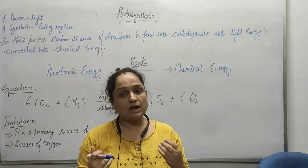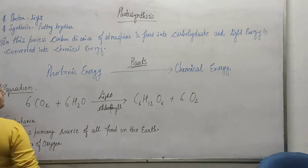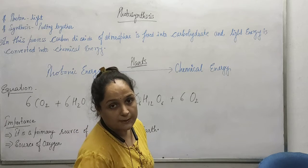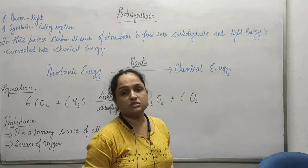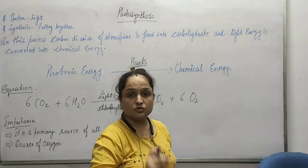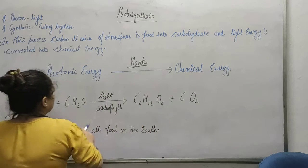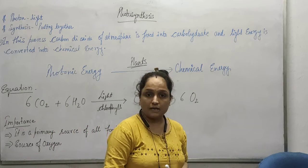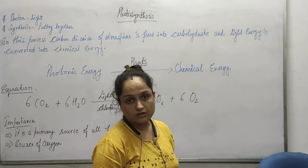Do you think we are able to do this process? Definitely no. We are not able to perform this process because we don't have the mechanism to trap the sunlight. So which is the organism that is able to perform this process? The organism able to perform this process is green plants, or some other photosynthetic organisms. Right now we are going to talk about this process happening in green plants.